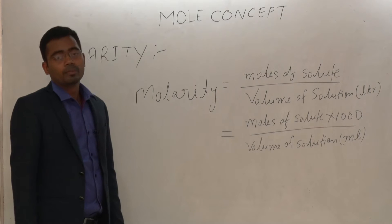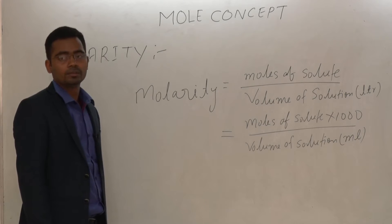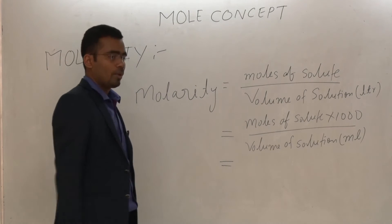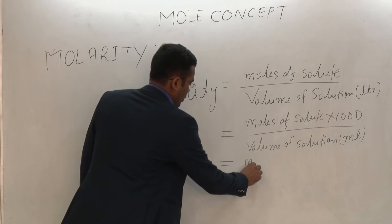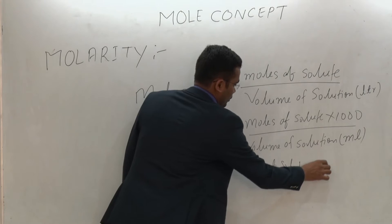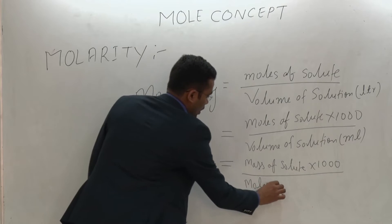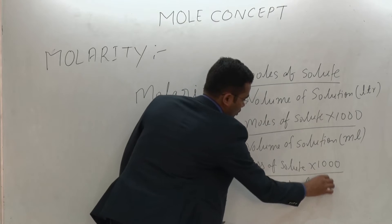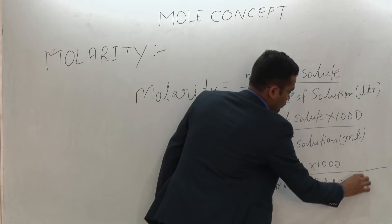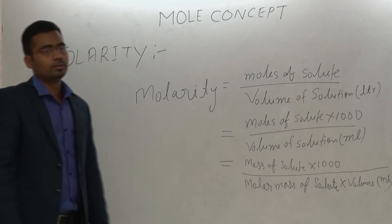Now, if weight of solute is given, how do you calculate? First you have to calculate moles. Moles equals given weight divided by molar weight. So in terms of molar mass, molarity equals mass of solute multiplied by 1000, divided by molar mass of solute multiplied by volume of solution in mL. You have to remember these three formulas.